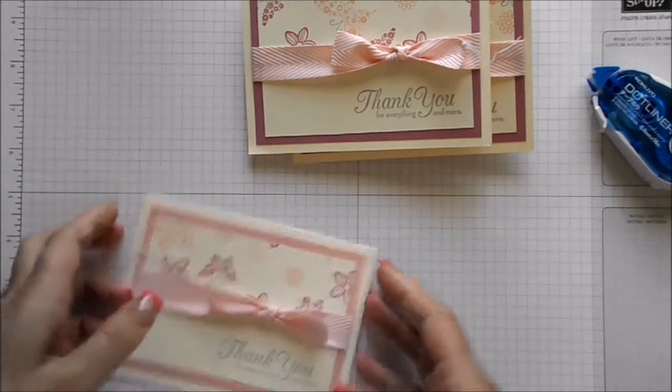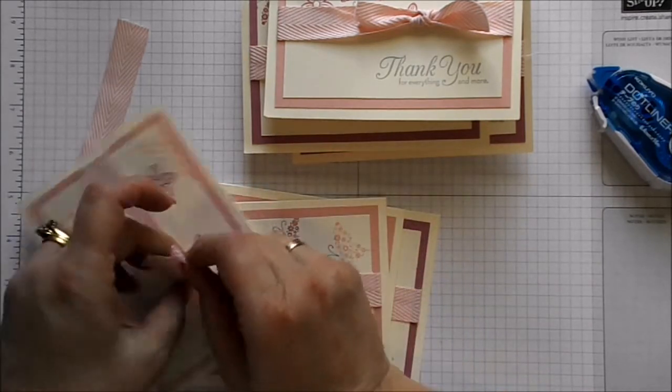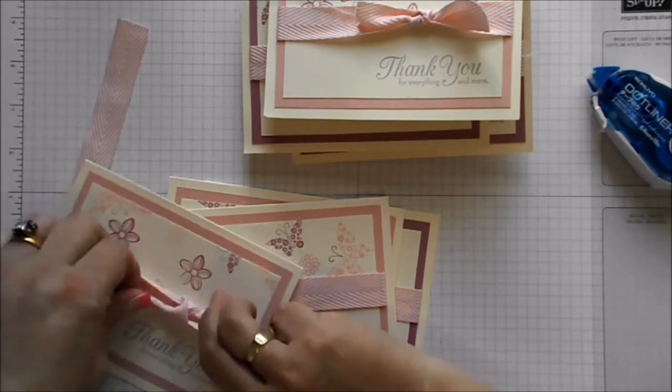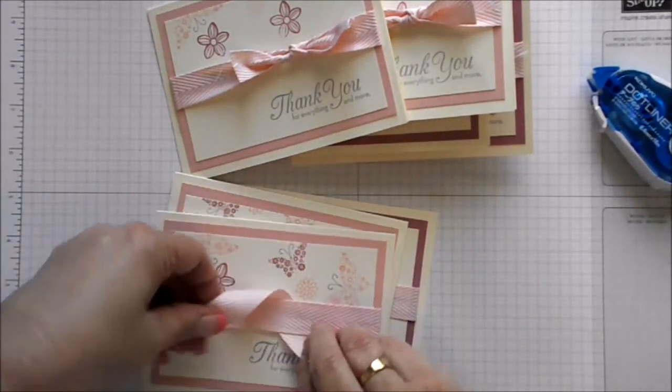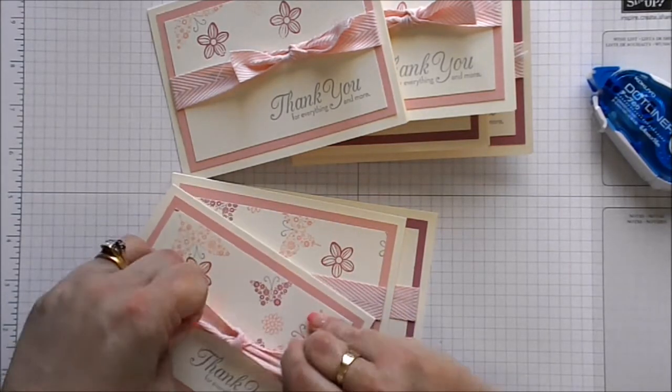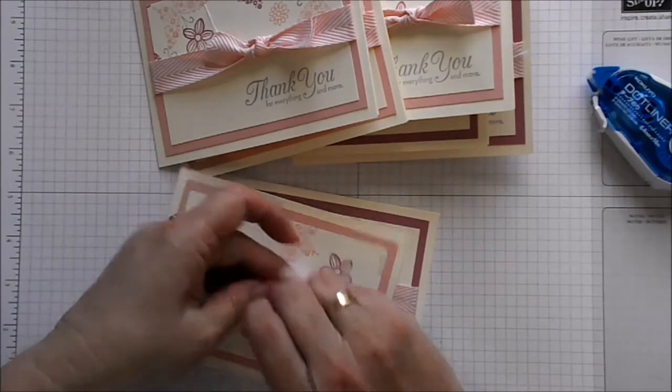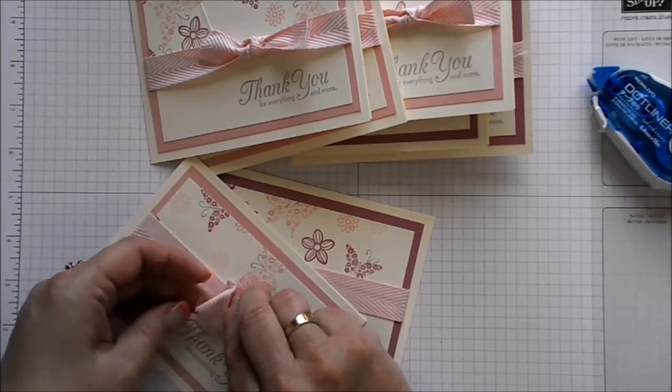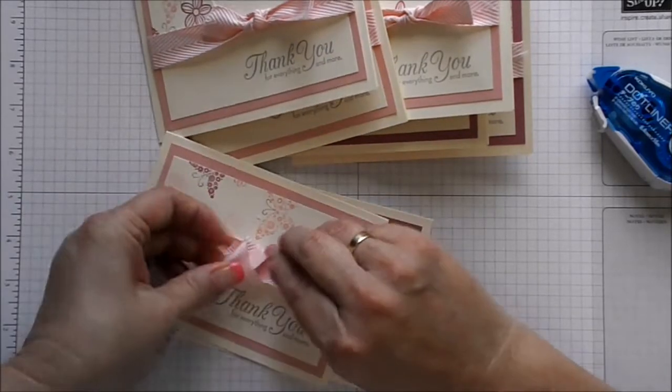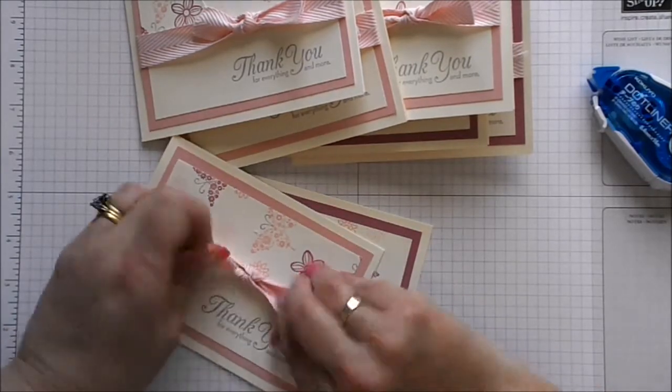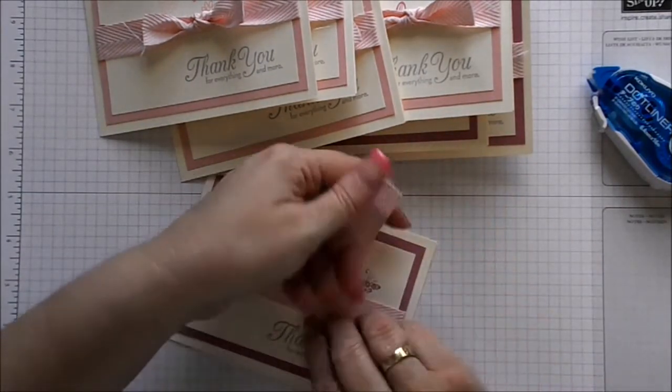We're getting down to the line now. Just under three minutes now. You know that you're getting down close to the line when you start becoming fumble fingers. One more and I will neaten these bows up a little bit. Okay two minutes to go, just bring my scissors in and give each of the ribbons a trim on the diagonal just to make the bows look a bit neater.